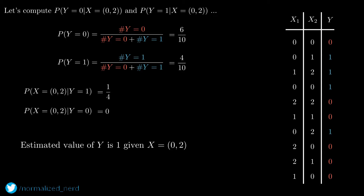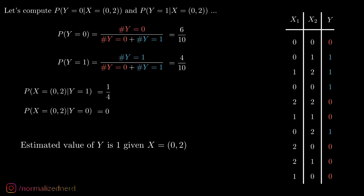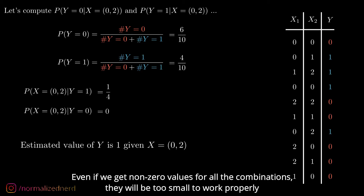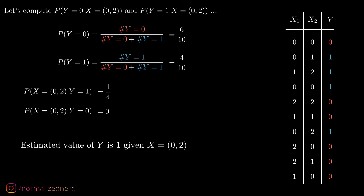We got an answer, but there is a huge problem with this method. It is hard to find that particular combination of x1 and x2 in our dataset. We only found one occurrence where y equals 1 and x1 was 0 and x2 was 2, and none where y equals 0 with the same features. With 50 features, it would be nearly impossible to find a particular combination. If we don't find even a single occurrence, the probability will always be 0, and we can't compare multiple zero values. To tackle this problem, we use the Naive Bayes classifier.